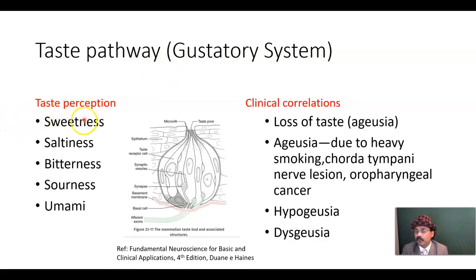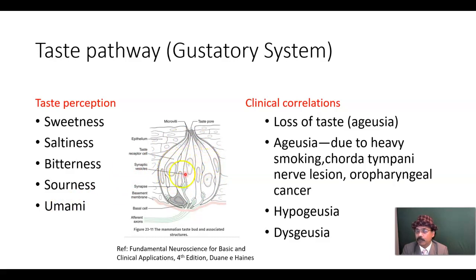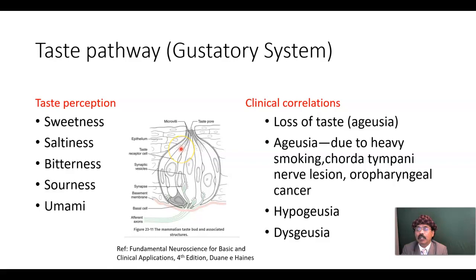Now, taste perception. We have different types of taste perception: sweetness, saltiness, bitterness, sourness, and umami. One taste bud may pick up multiple taste perceptions, and these are localized in different parts of the tongue. It is not that sweetness is only at the tip — there is always overlapping across the areas of taste perception.